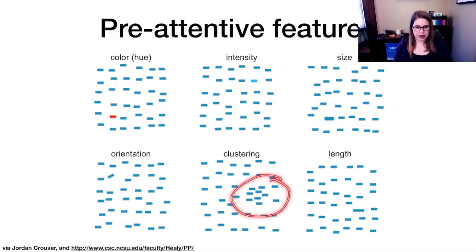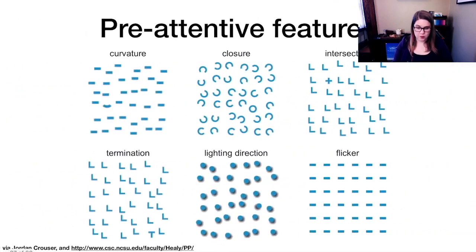Clustering, our brains can capture clusters really quickly. And then length, sort of identifying that one's not the same length. We can usually do that in just milliseconds. We can also detect things that are different based on curvature, based on closure, based on intersection. So if two things are intersecting in a different way.